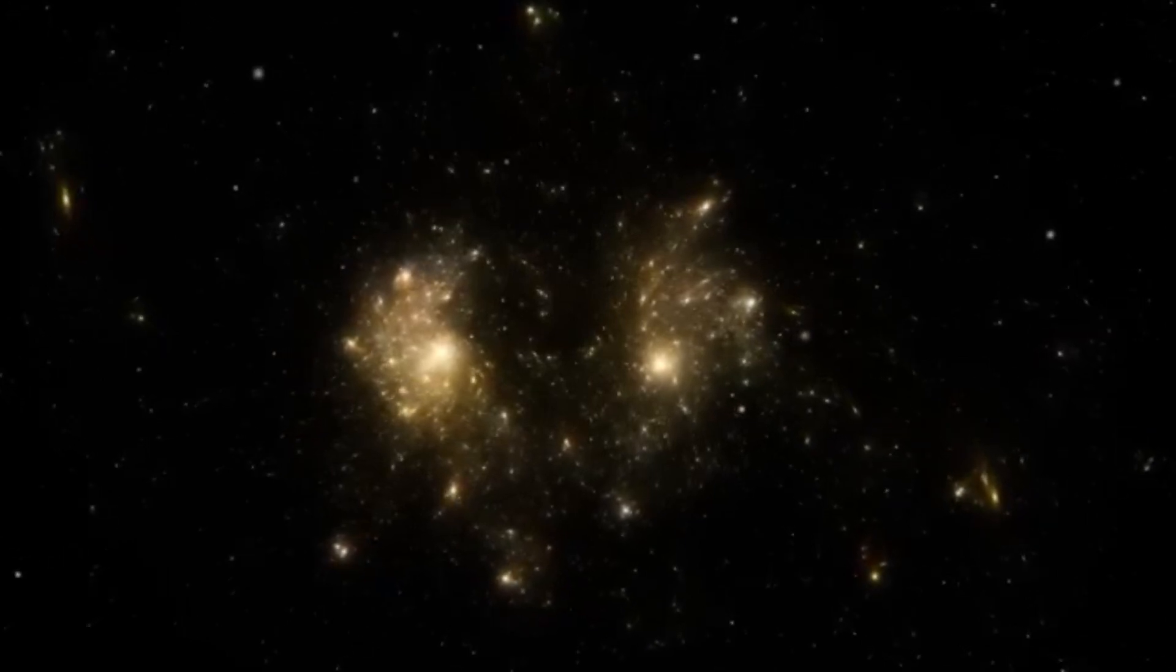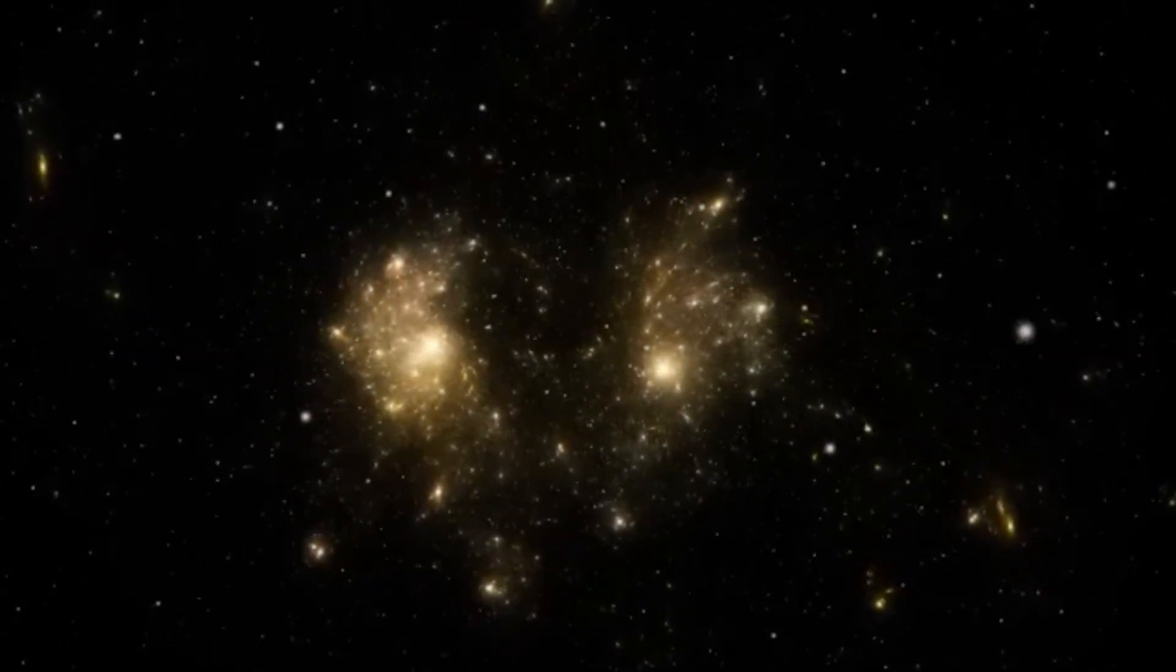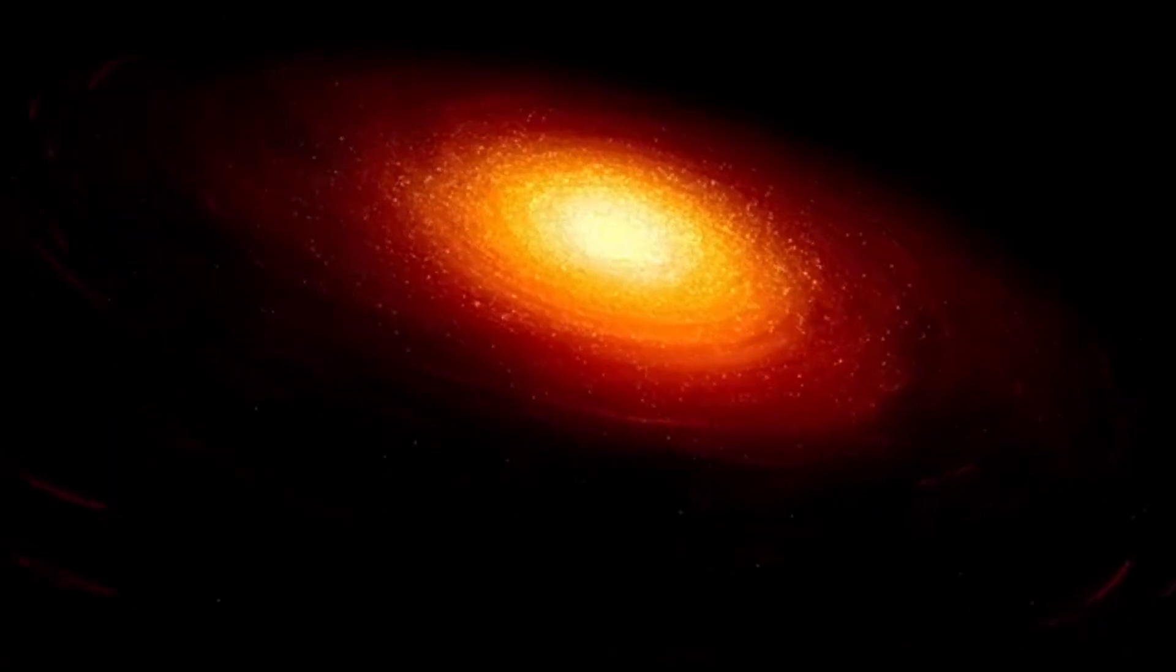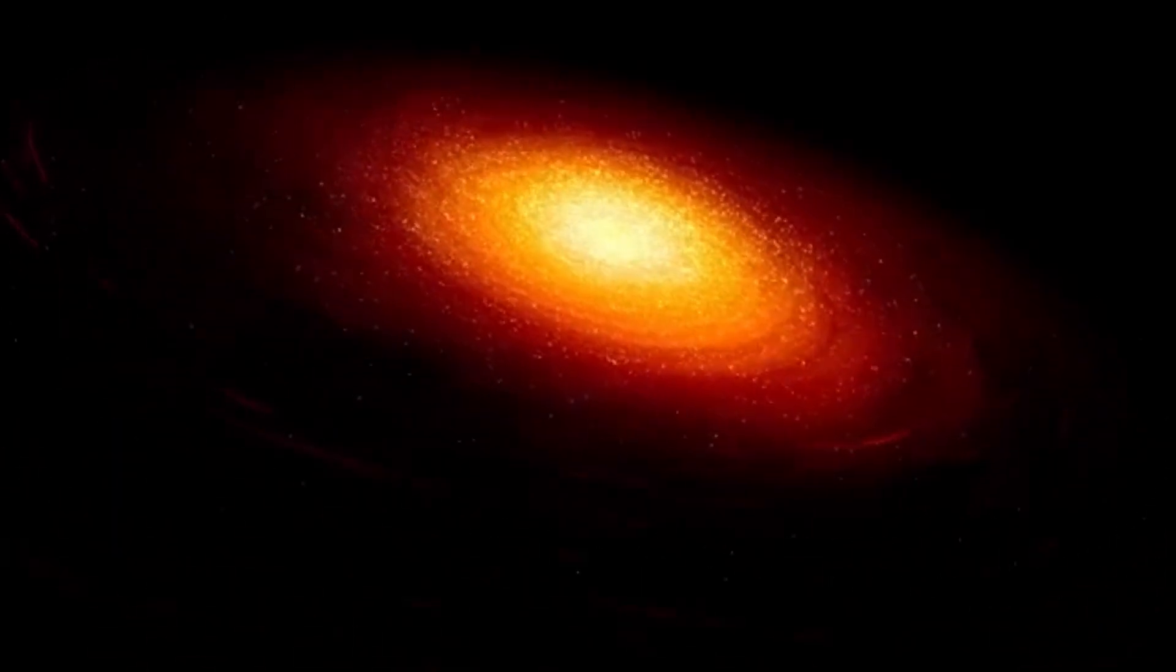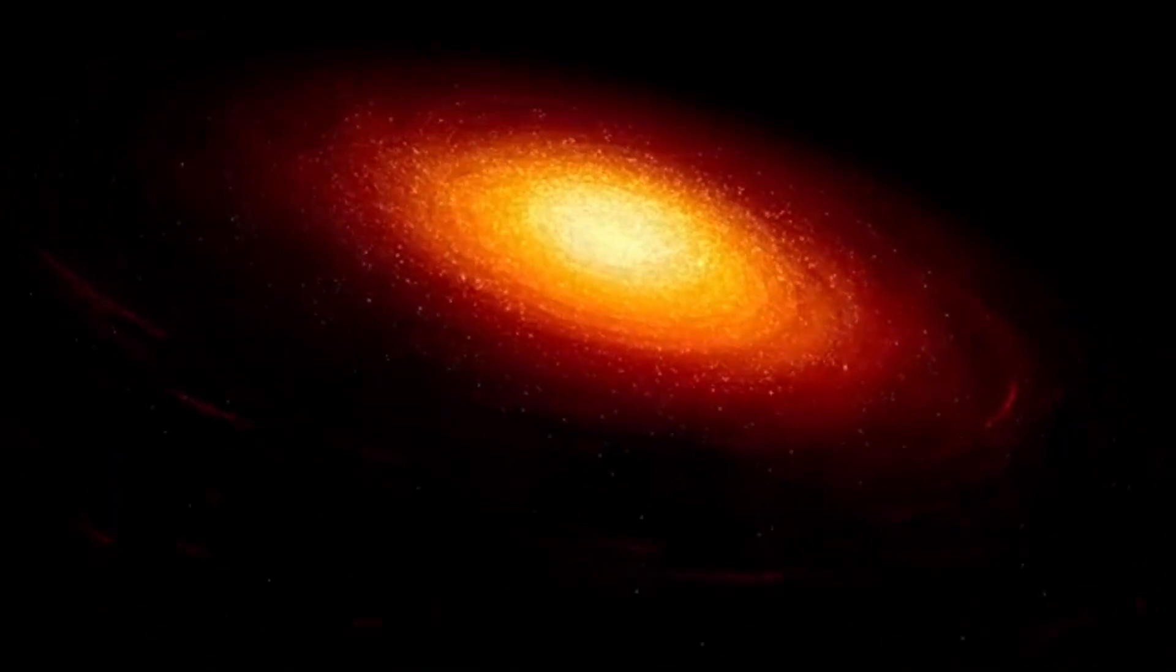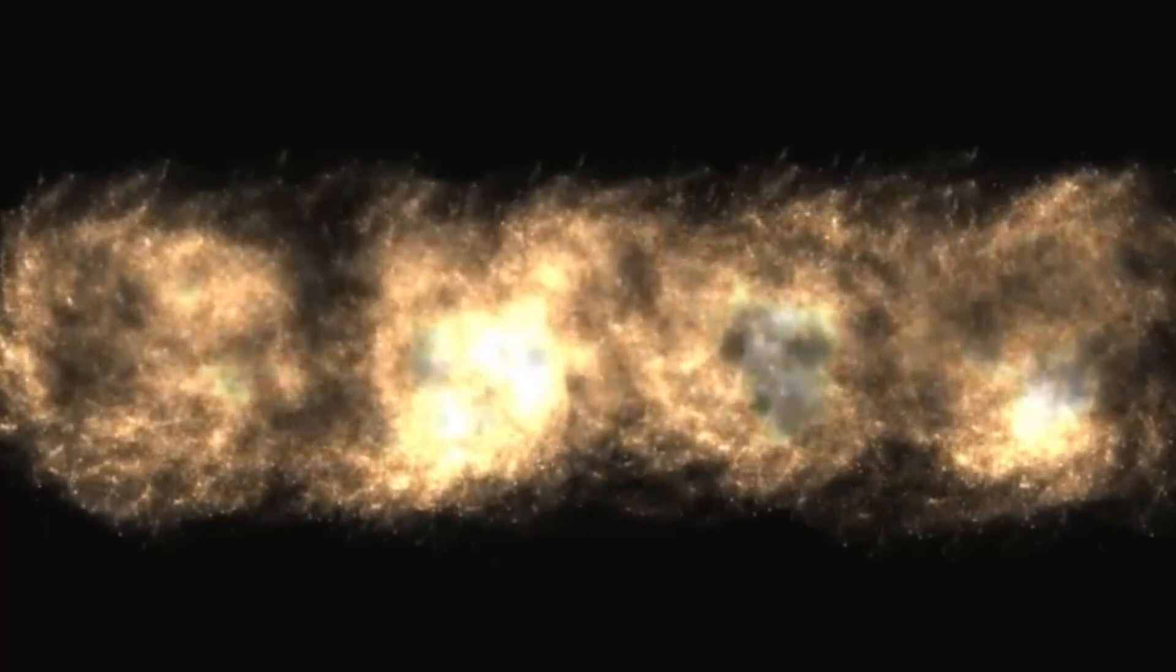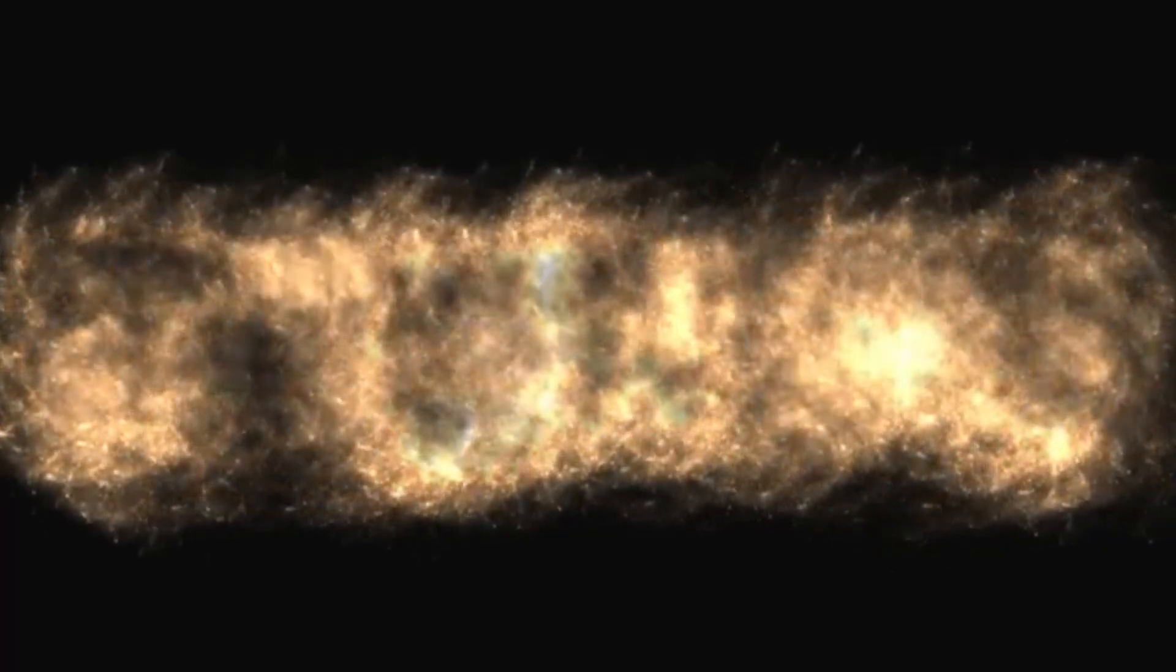Binding the universe together are cosmic filaments, enormous threads of gas, dust, and dark matter that stretch across billions of light-years. These filaments form a web-like structure that links galaxies and clusters into an intricate cosmic network. The universe's matter is not evenly distributed. Instead, it forms this delicate web of filaments and nodes where gravity gathers galaxies together.